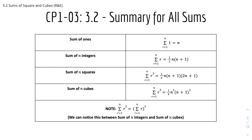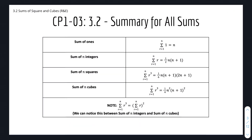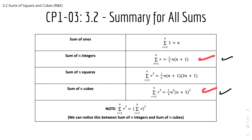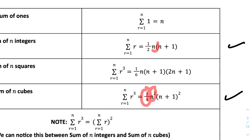Here's an important note: the sum of n cubes is equal to the sum of n integers squared. We can notice this relationship between the two formulas. Half squared gives one-quarter, n squared gives n squared, and (n+1) squared gives (n+1) squared — so the sum of cubes formula is simply the square of the sum of integers formula.